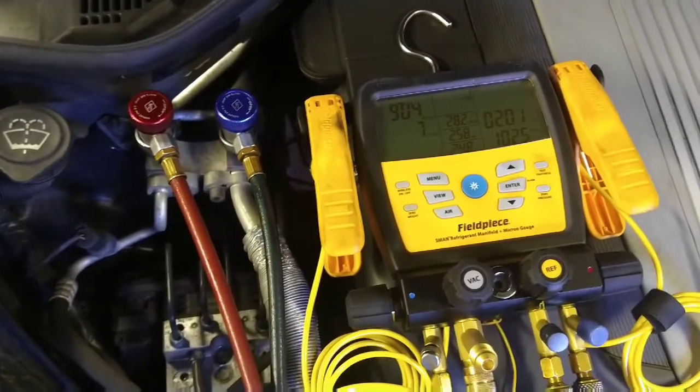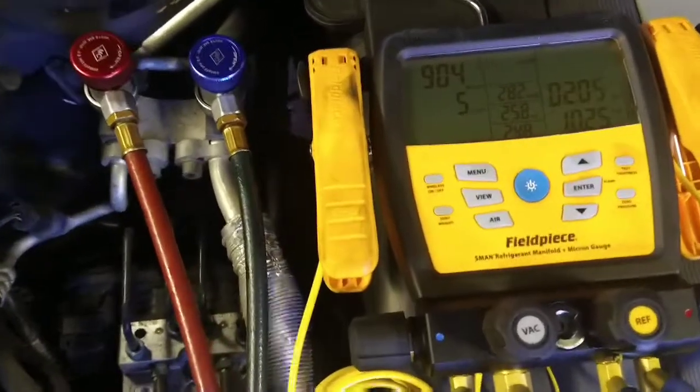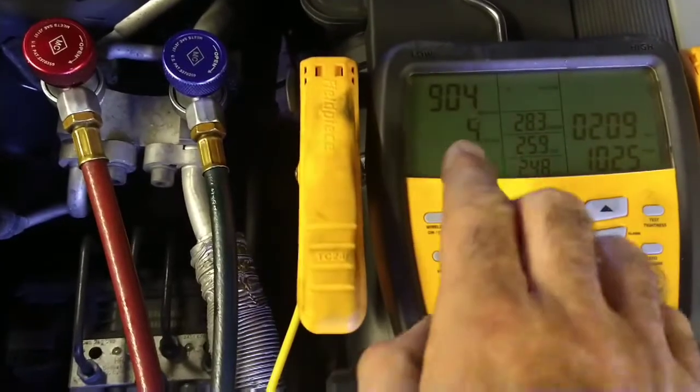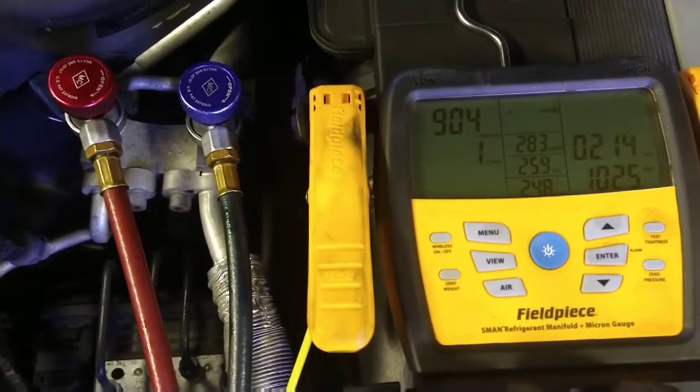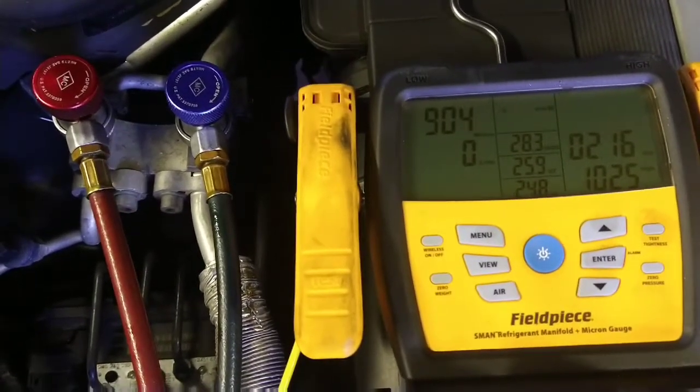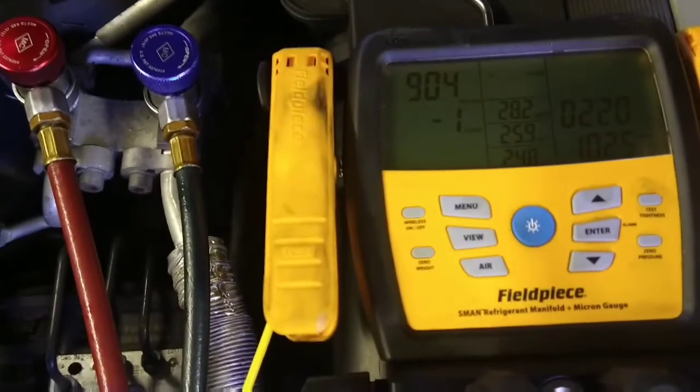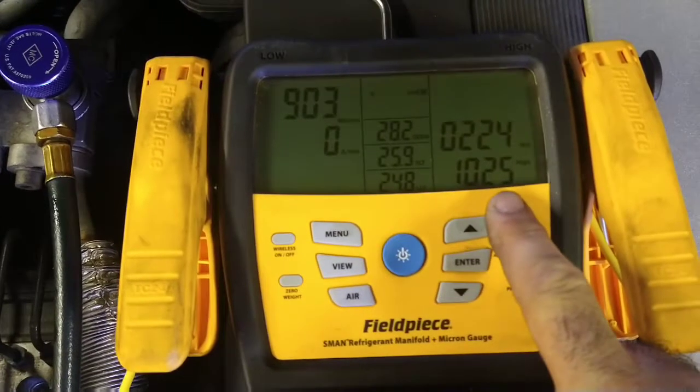I've got my gauges on it and I've put it under vacuum. It's set for a couple of minutes. It's on 904 microns, which is a small percentage of one psi. I can't give you exact details but it's not a lot. I've set the alarm on the gauges to go off at 1025 microns.